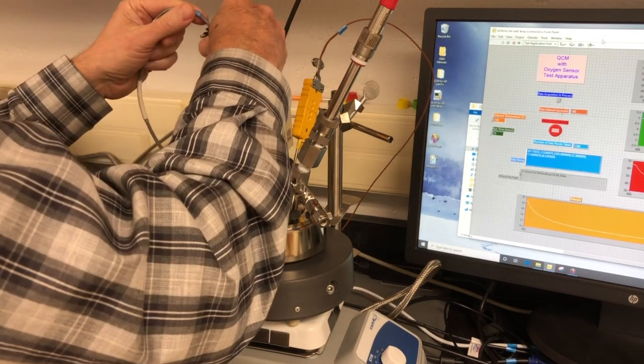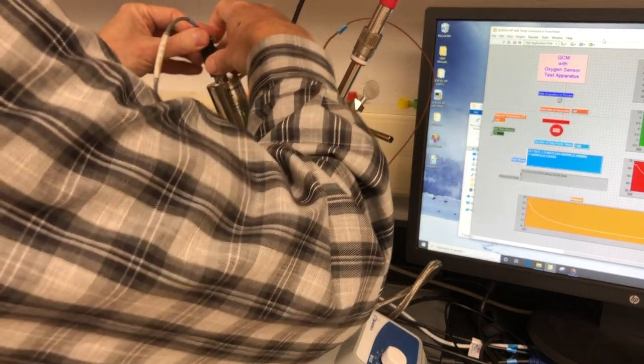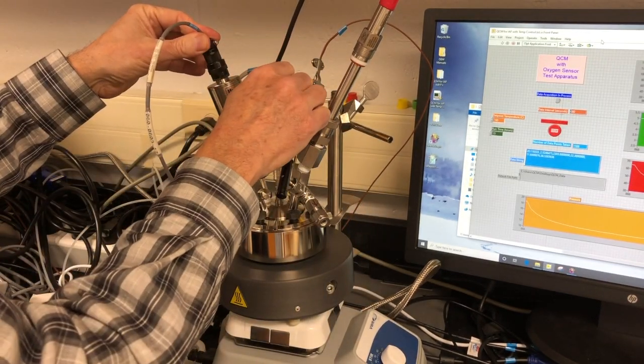Now fit the pressure sensor connector. This will connect readily once the pins are aligned properly. Rotate to tighten.